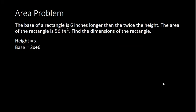To find the area of a rectangle, we do base times height. We can use this formula and plug in what we know to find the unknown. The area is 56 square inches, so I plug 56 in for A. The base is 2x plus 6, so I put 2x plus 6 in for B. And the height is x, so I put x in for H. So I have 56 equals x times 2x plus 6.